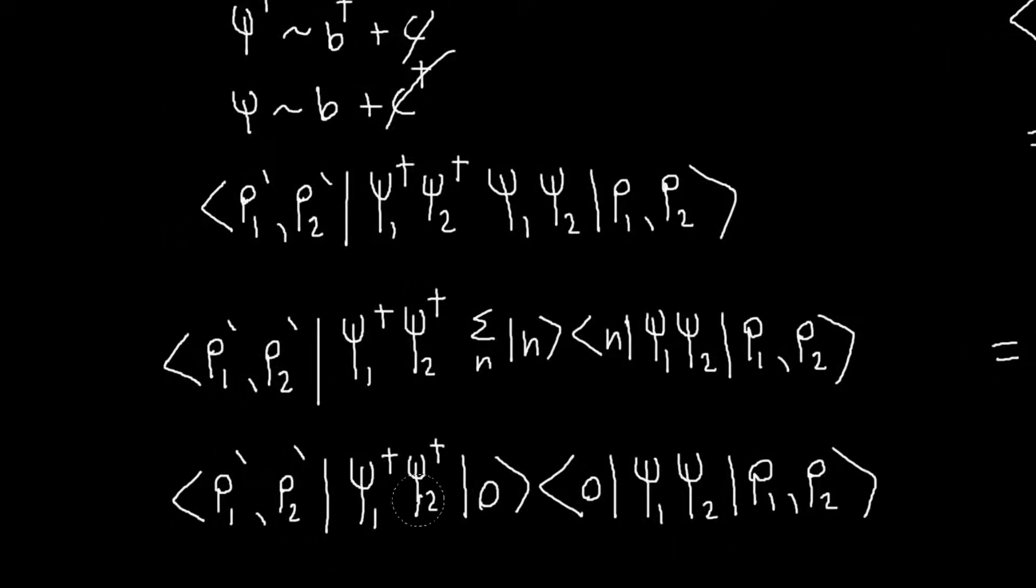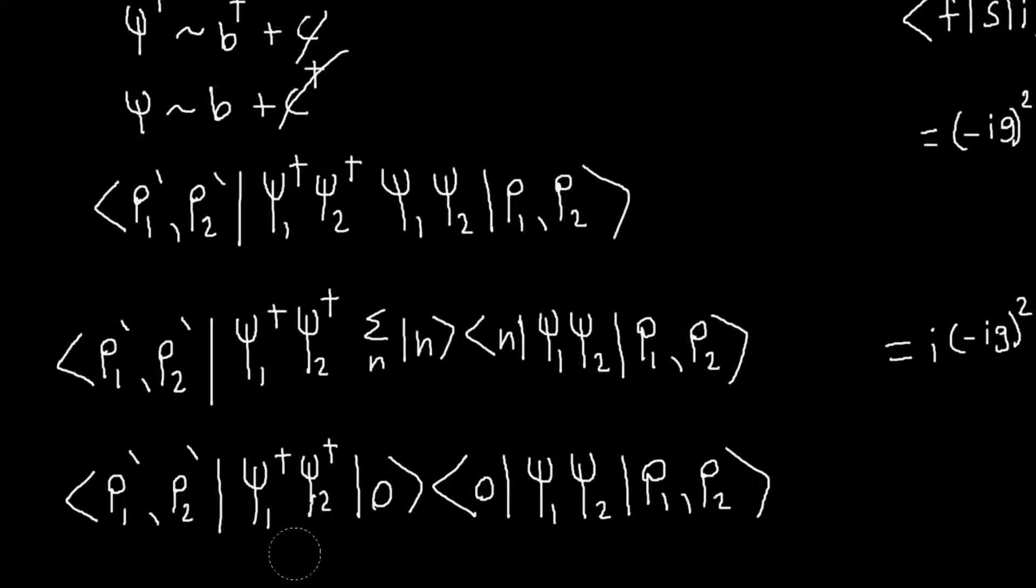So we need to evaluate these things. But one thing we can notice is that this term is the complex conjugate, or the Hermitian conjugate, of this term. So we can really just worry about calculating one of these things, and then I can find out what this is just by taking the complex conjugate and exchanging P1 and P2 with P1' and P2'.